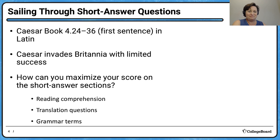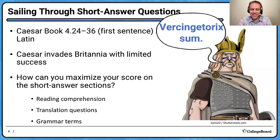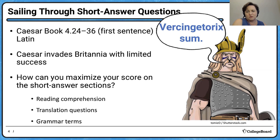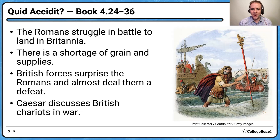We're seeing 'Vercingetorixus sum' — it looks like we have Vercingetorix joining us today. He's a member of the Arverni tribe we were talking about yesterday. I don't know that he ever went to Britannia, but it's nice to have the Gallic perspective come along with us. So we often like to start these off with a nice review of the bits of the Latin. Here's our 'quid occident' — what happened — slide for book four.